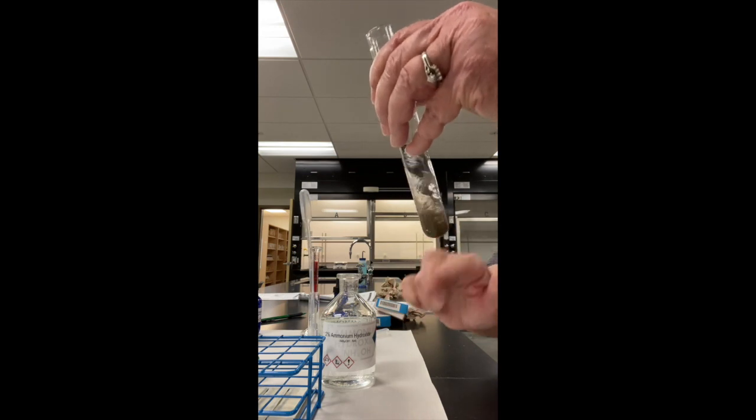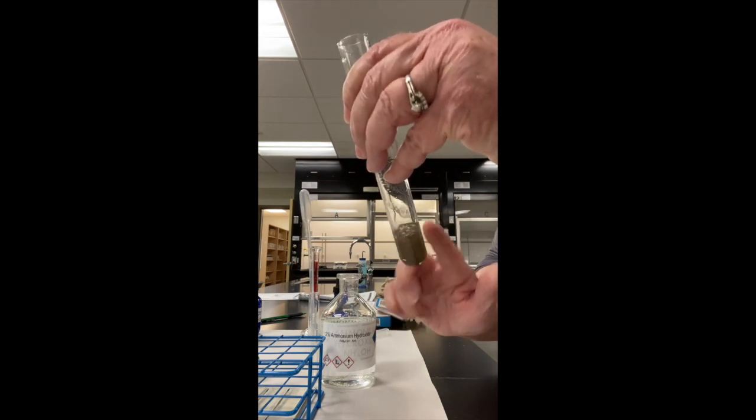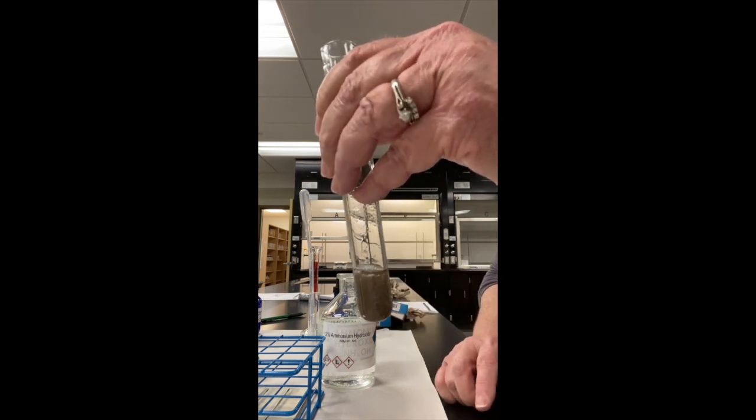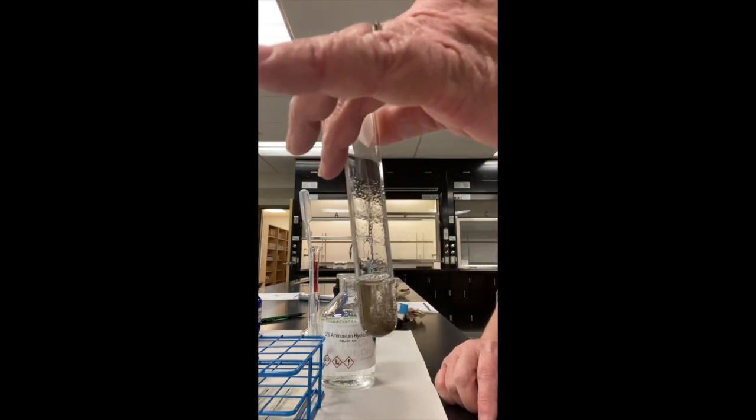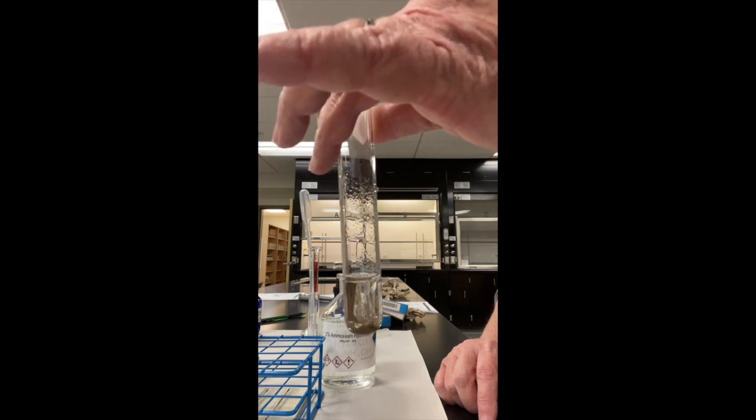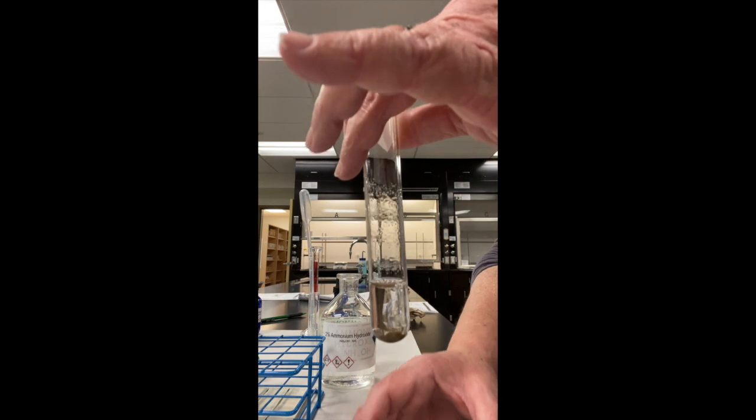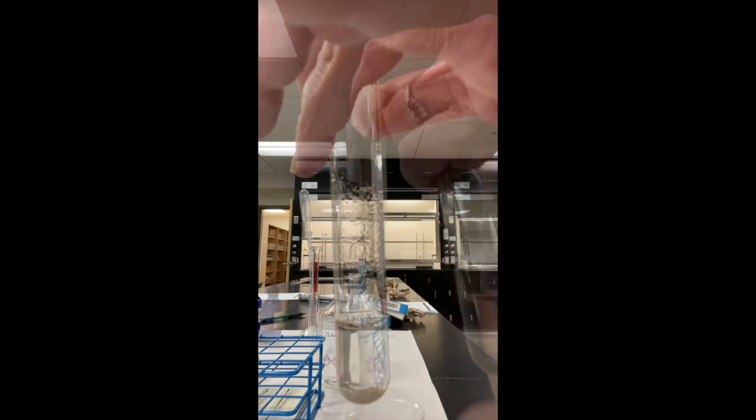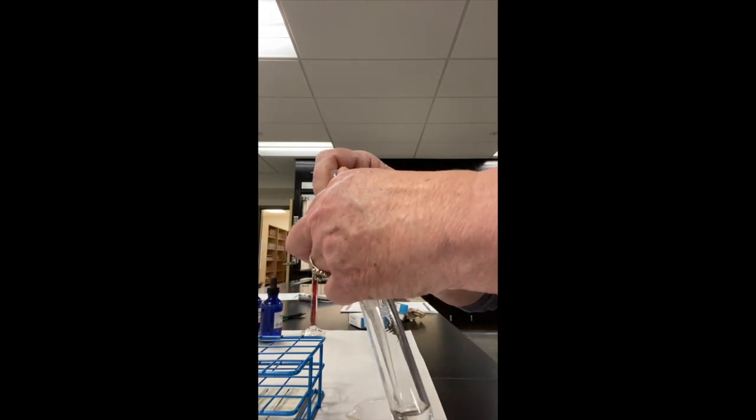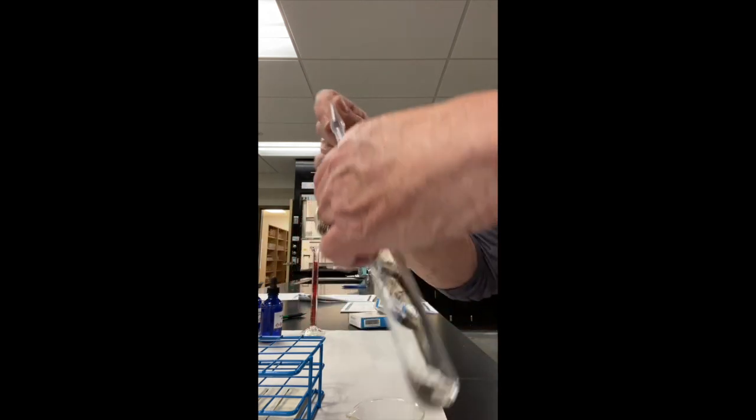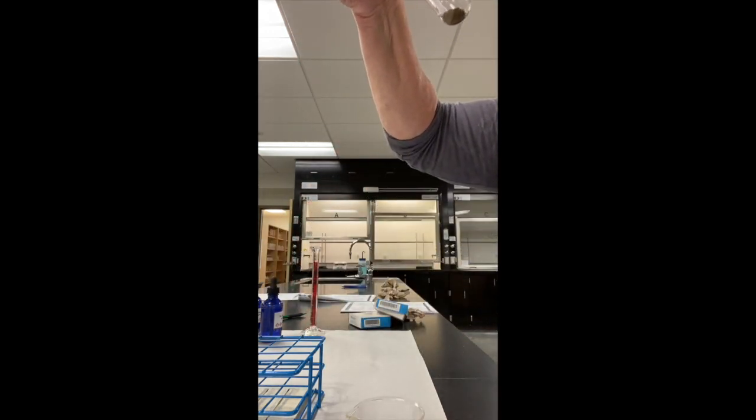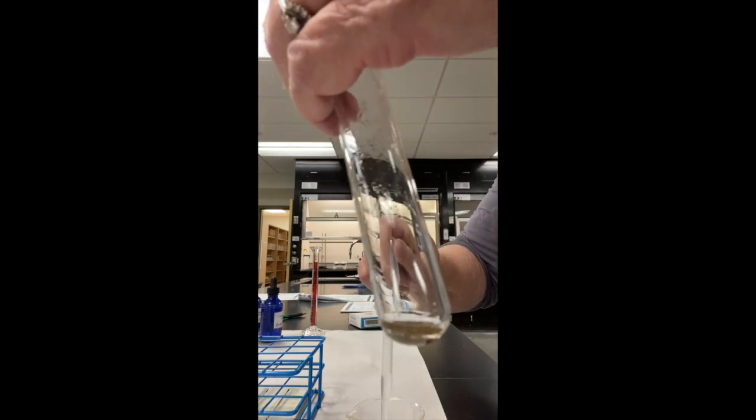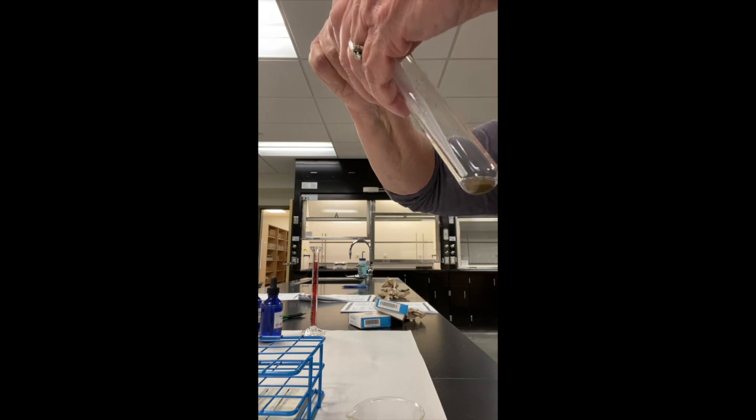And then I'm going to actually transfer by decanting. I'm going to transfer just the liquid. So I'm going to allow the solid to settle to the bottom. Then I'm going to use a transfer pipette and I'm going to go ahead and put it in this so I have a little easier time to put it in my test tubes. I'm going to go ahead and transfer just the liquid, not the precipitate that remained on the bottom. This is called decanting because I let the solid settle to the bottom and I'm only removing the liquid from the top.